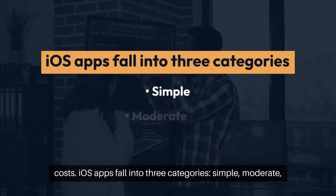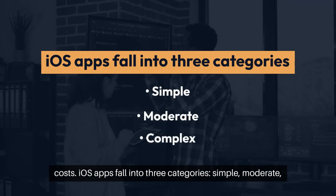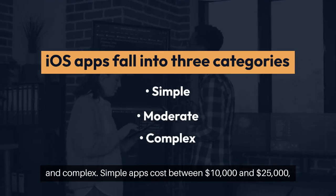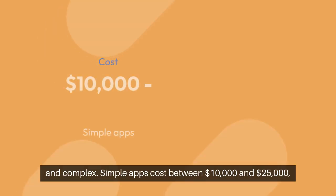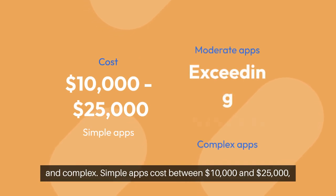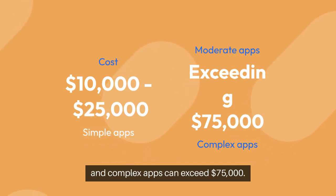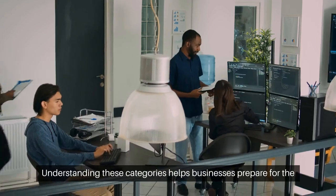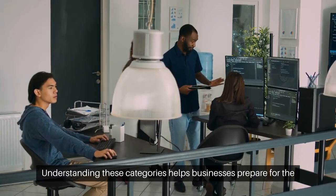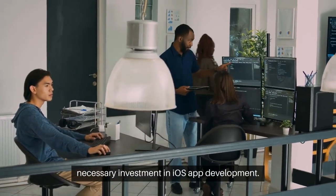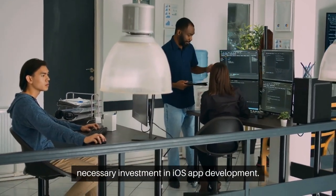iOS apps fall into three categories: simple, moderate, and complex. Simple apps cost between $10,000 and $25,000. Moderate apps range from $25,000 to $75,000, and complex apps can exceed $75,000. Understanding these categories helps businesses prepare for the necessary investment in iOS app development.